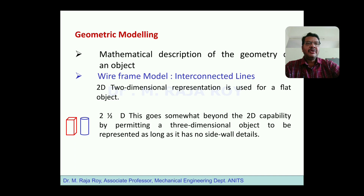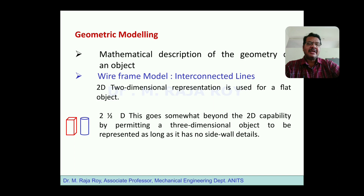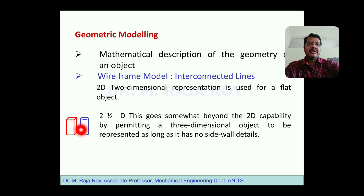Beyond 2D comes the 2.5D capability. Generally people are aware of 2D and 3D only, but 2.5D means capability just beyond 2D and not complete 3D. If you take a circle and project it to some distance, you get a cylinder. If you take a square and project it to some distance, you get a prism. These are called 2.5D objects and they will not have any sidewall effect.